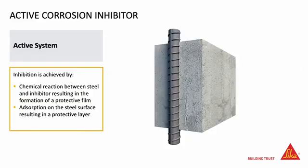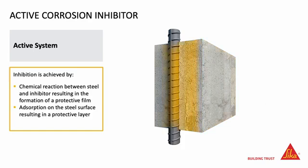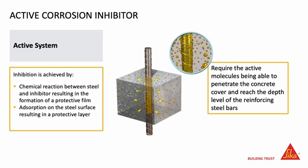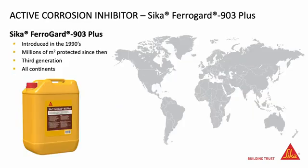Different systems of corrosion inhibitors are available. Amongst them, there are active and passive inhibitors. Surface-applied active inhibitors are applied at the concrete surface. Their active molecules do not react with the cement compound or the aggregate, but can migrate to the rebar level. These systems will only be effective if the active molecules can migrate through the concrete cover to reach the reinforcing bar level. In Cica, the first version of this inhibitor was introduced in the late 1990s. We are now in the third generation of this technology, and millions of square meters of concrete surface have been protected since then in all continents.